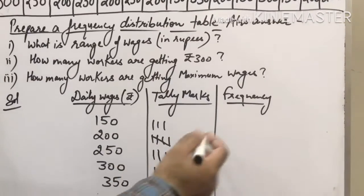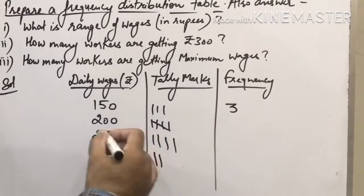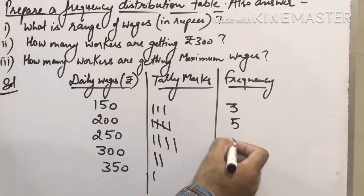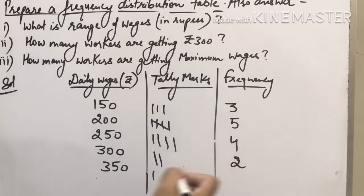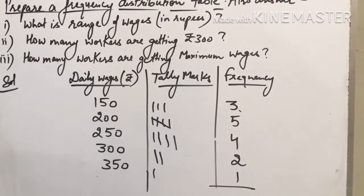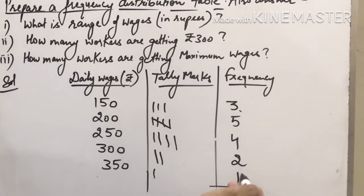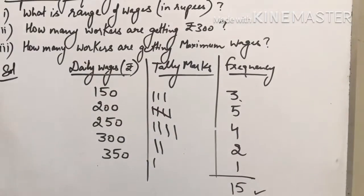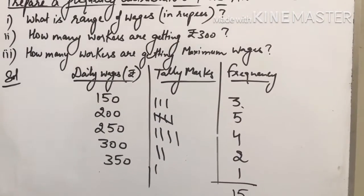Now let's write the frequency. 150 appears 3 times, 200 appears 5 times, 250 is four times, then 300 is 2, and 350 only one. Check the total: 3 plus 5 is 8, 8 plus 4 is 12, 12 plus 3 is 15. So 15 workers, that means our table is correct.